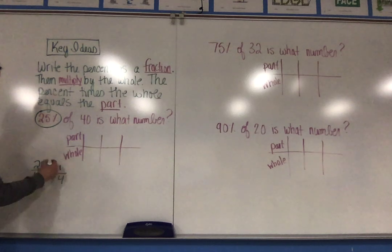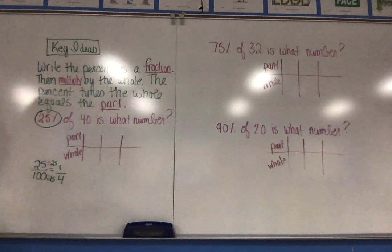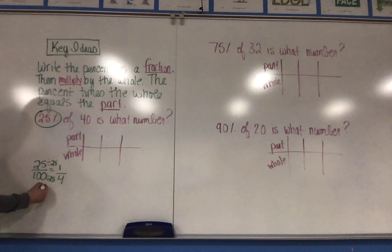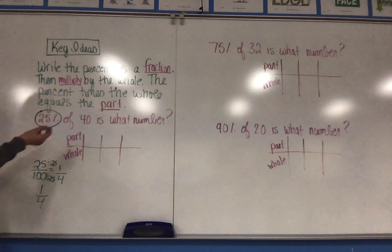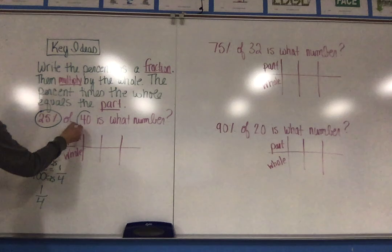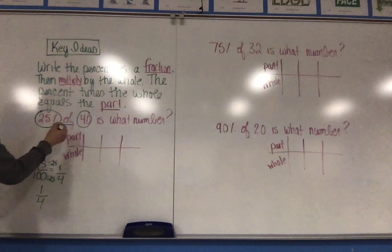So I'm making an equivalent fraction by dividing the numerator and the denominator by 25. Next, I'm going to take that fraction one-fourth, and I'm going to multiply it by the whole. So it says of 40.